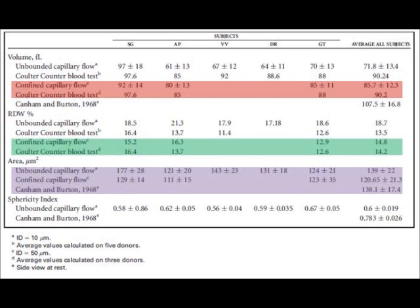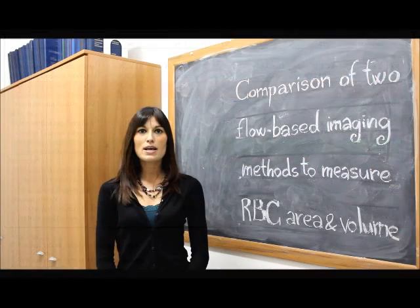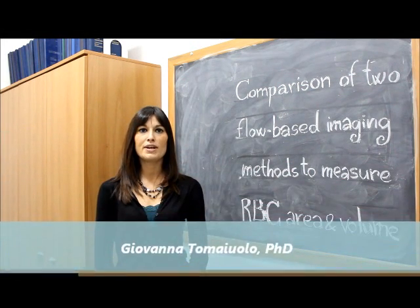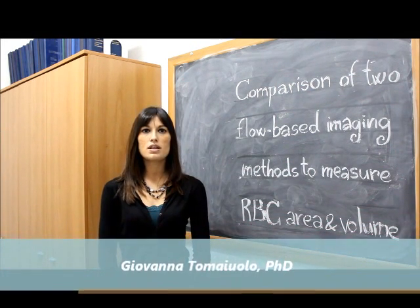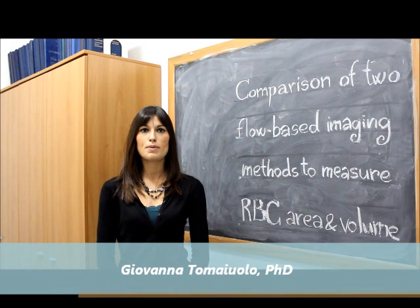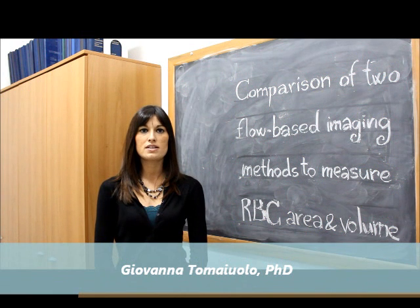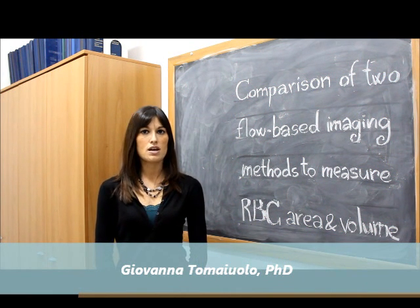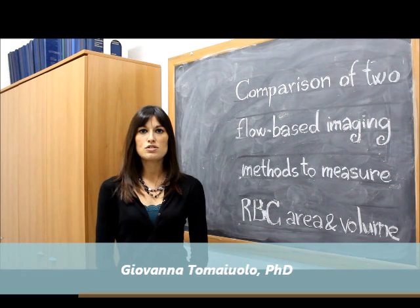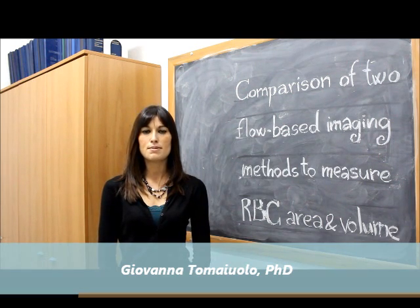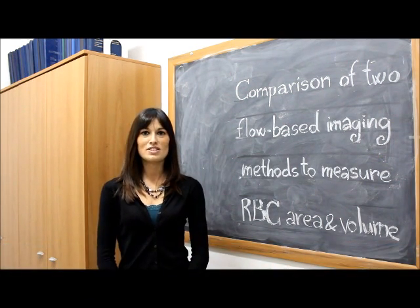In particular, measurements of red blood cell surface area, currently lacking in routine clinical tests, are also obtained. Unlike impedance measurements, our microfluidic technique is well-suited for monitoring and measuring individual red blood cell geometric parameters, such as volume and surface area, at a single cell level. It does not require suspending cells in electrolyte solutions, and, being a label-free technique, could be used to analyse images of flowing red blood cells from in vivo experiments as well. Thank you for watching this video.